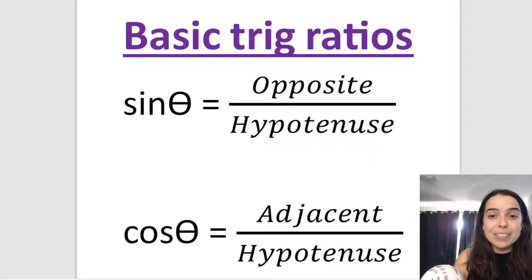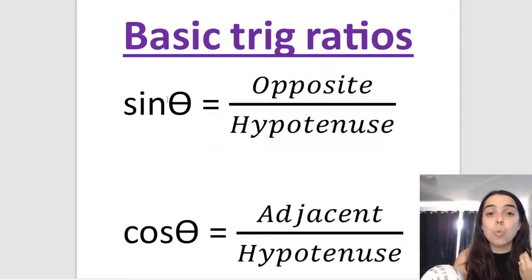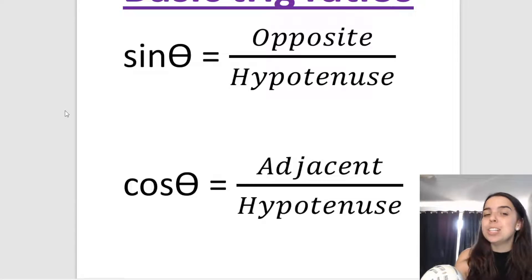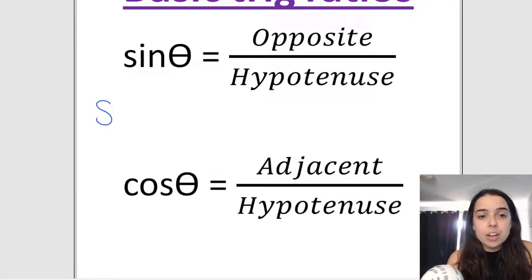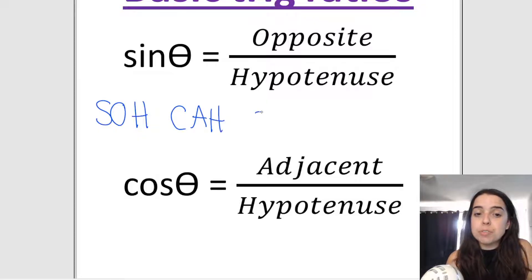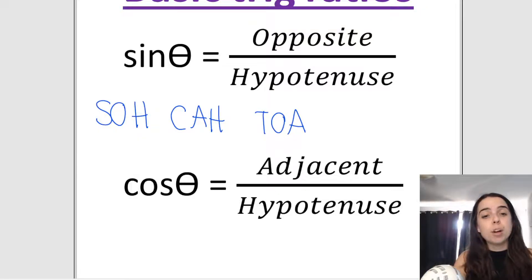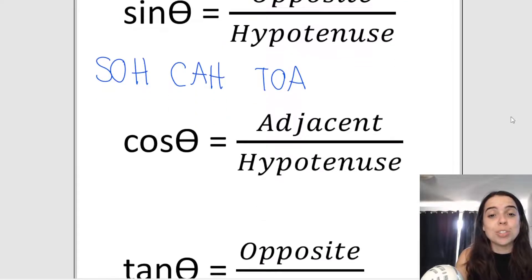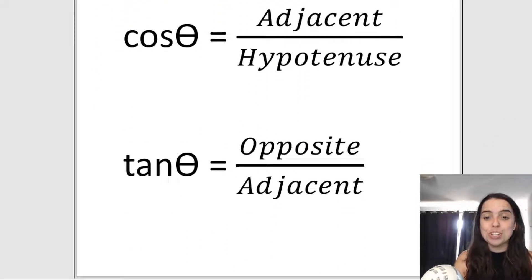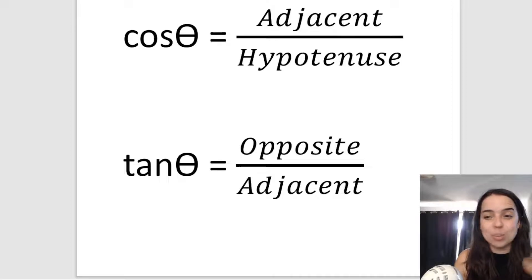If you missed my previous video on the basic trig ratios, go watch that first. But you need to remind yourself of SOH CAH TOA. Sin is opposite over hypotenuse, cos is adjacent over hypotenuse, and tan is opposite over adjacent. You need to go over that first in order to carry on with this video.